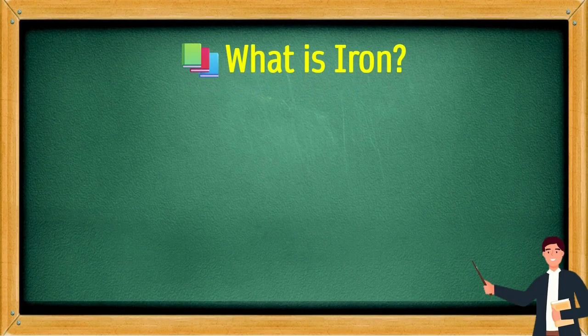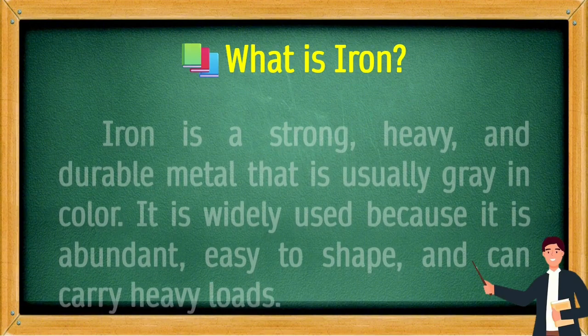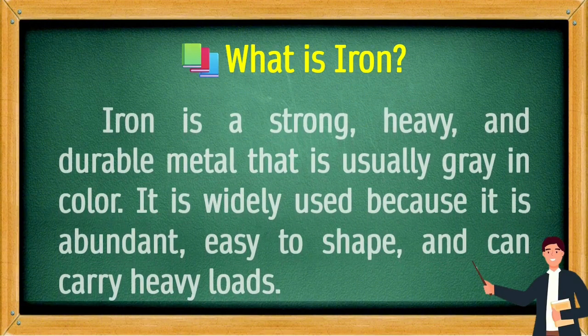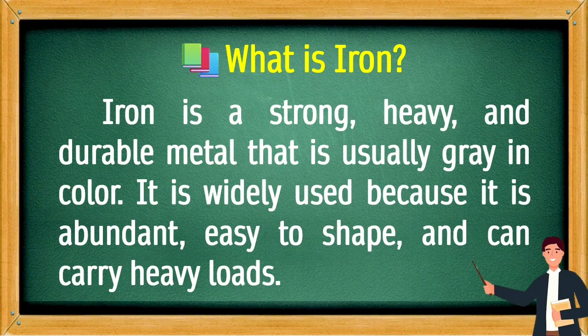What is iron? Iron is a strong, heavy, and durable metal that is usually gray in color. It is widely used because it is abundant, easy to shape, and can carry heavy loads.